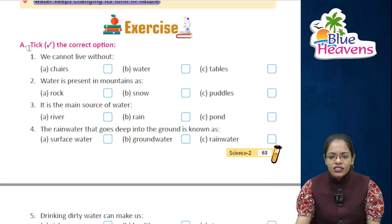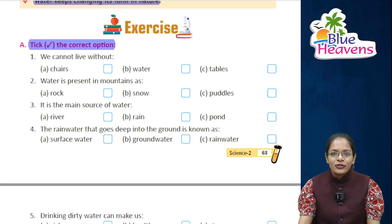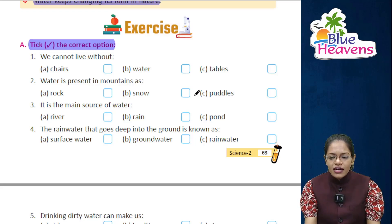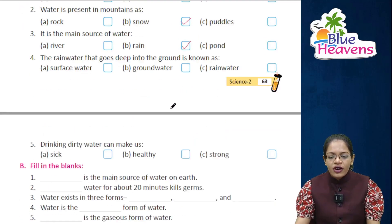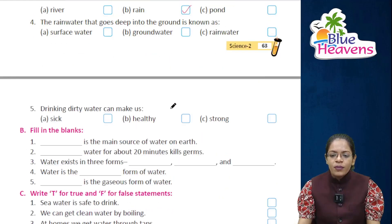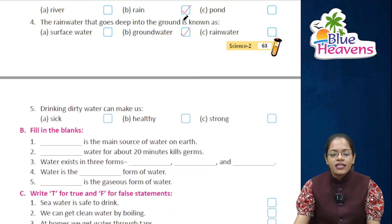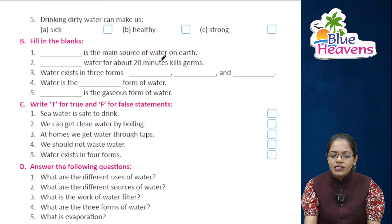Now it's exercise time. Let's do exercise A — tick the correct option. First statement: we cannot live without water — B is the right answer. Water is present in mountains as snow — B is the right answer. Rain is the main source of water — B is the right answer. The rain water that goes deep into the ground is known as ground water — B is the right answer. Drinking dirty water can make us sick — A is the right answer.